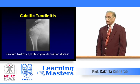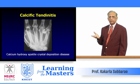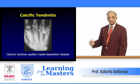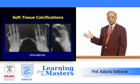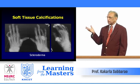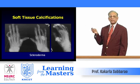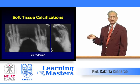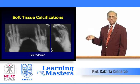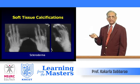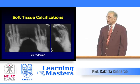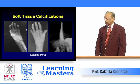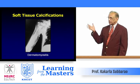Calcific tendinitis in the hand is rare but can occur, and is painful. Calcifications of soft tissues with atrophy are common in scleroderma, particularly in CREST syndrome — comprising calcinosis, Raynaud's phenomenon, esophageal dysmotility, sclerodactyly, and telangiectasia. In scleroderma there is also resorption of the distal phalangeal tufts.